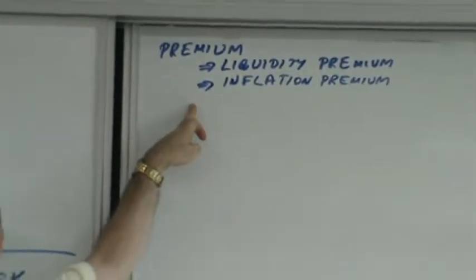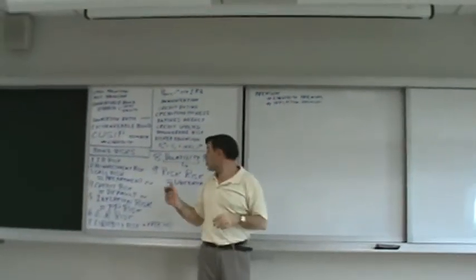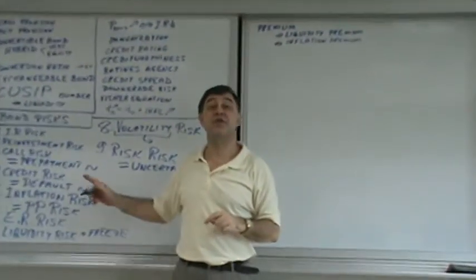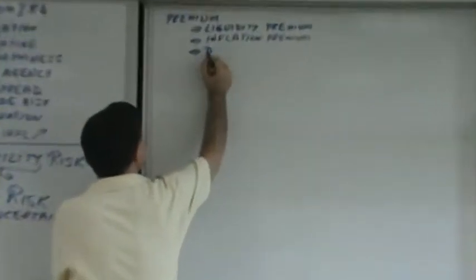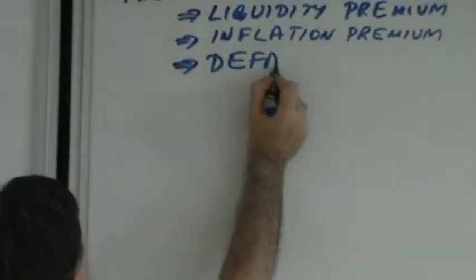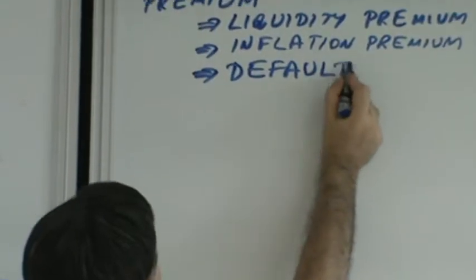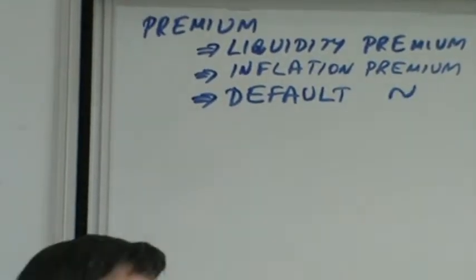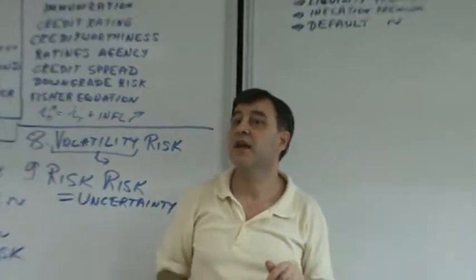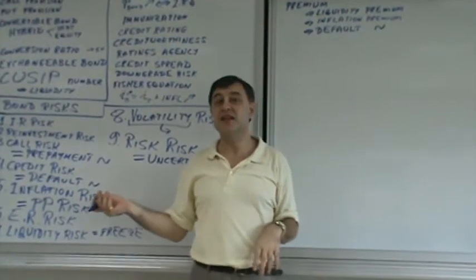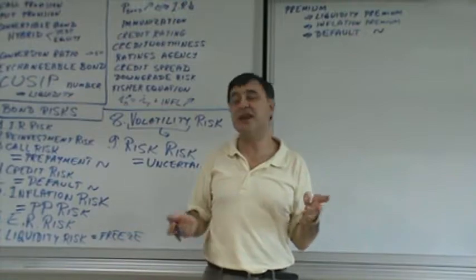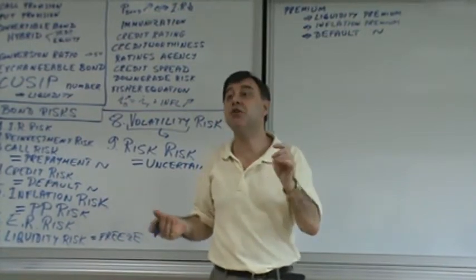Then you have, for credit risk or default risk, you got a default premium. Then, for exchange rate risk, you got exchange rate premium, but we sometimes call it currency premium.